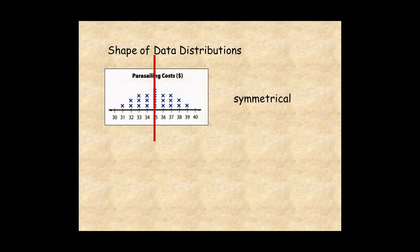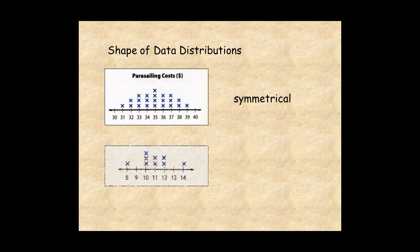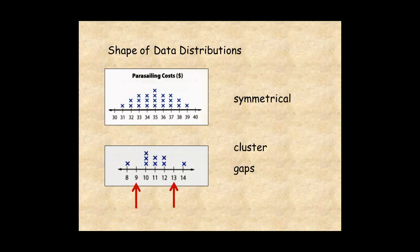On the other hand, this data set is not symmetric. It has a cluster of data values within the interval 10 to 12. The gaps at 9 and 13 have no data values. The value 10 is a peak, because it's the most frequently occurring value.